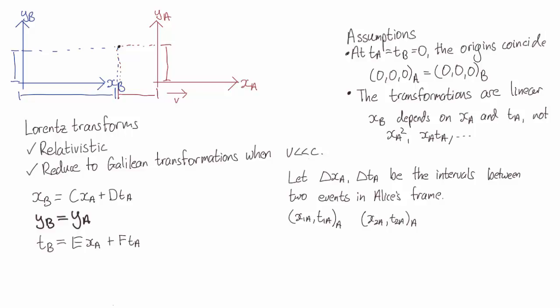Now we'll call Delta Xa and Delta Ta the intervals between these events. In this case, what is Delta XB? How does that transform? So as a hint, work out what X1B is and X2B is, and then Delta XB is X2B minus X1B.